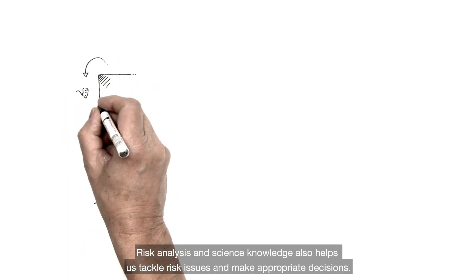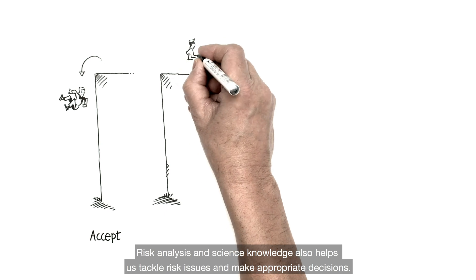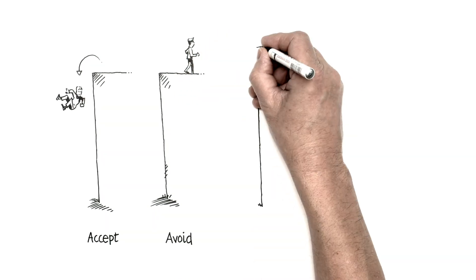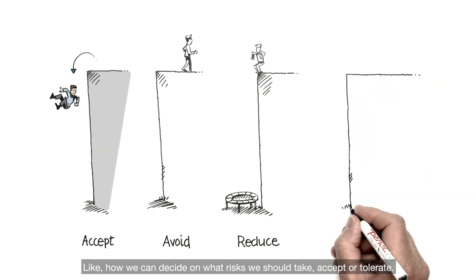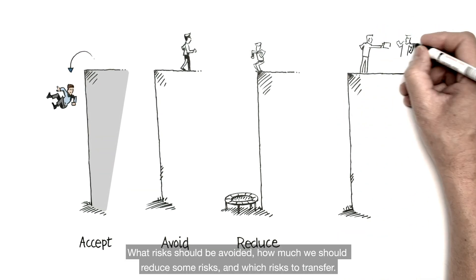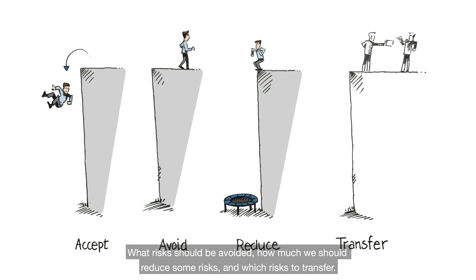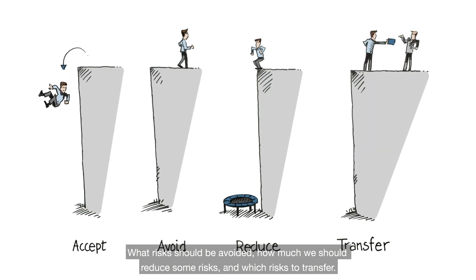Risk analysis and science knowledge helps us tackle risk issues and make appropriate decisions, like how we can decide on what risks we should take, accept, or tolerate, what risks should be avoided, how much we should reduce some risks, and which risks to transfer.